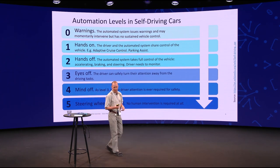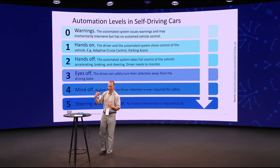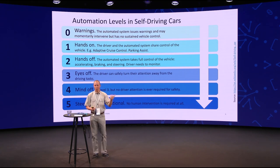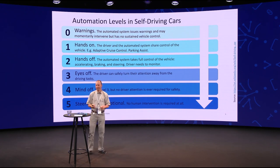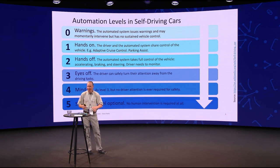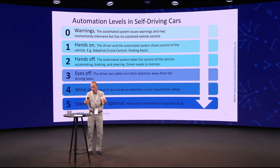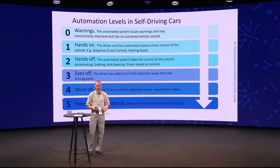Before I dive into network automation, let's just review what the car industry did. They came together and defined levels that are on Wikipedia today for what it means to be self-driving. On level zero, you get warnings — it's not really automated or self-driving at that point, but you can at least do emergent brakes. The steering wheel starts to vibrate if you are crossing the line without your blinkers on. That's level zero.